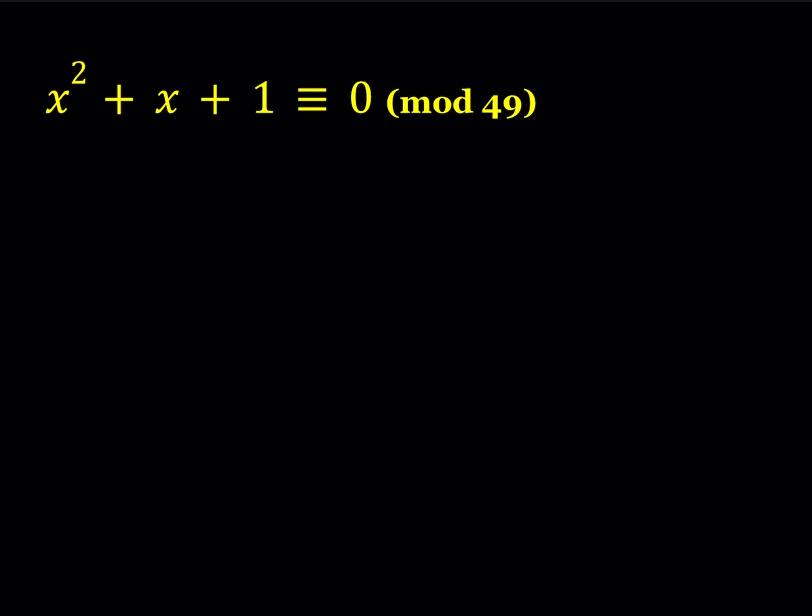We have x squared plus x plus 1 is congruent to 0 mod 49, and we're going to be finding the x values. Now what is that supposed to mean? Mod 49 means basically you're considering all remainders when you divide a number by 49. So you're talking about a set of all these numbers,